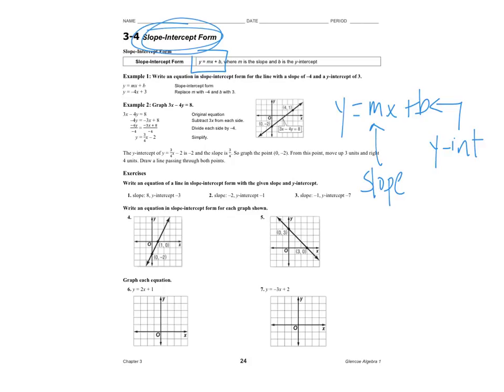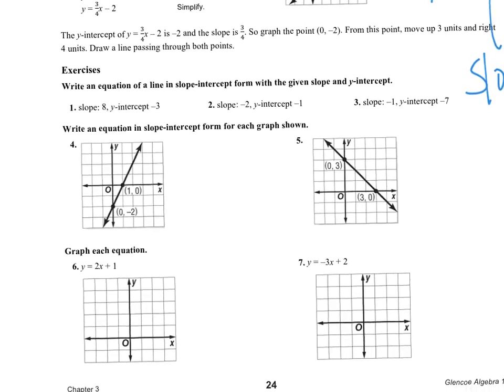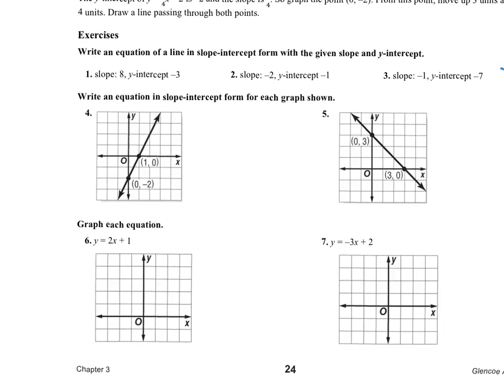Pause this as you need to. Use this example problem up here. Problems one, two, and three all want me to just write an equation of a line if I know the slope and the y intercept. Number one, if the slope is 8, that means y equals 8x. If the intercept is negative 3, negative 3, minus 3.